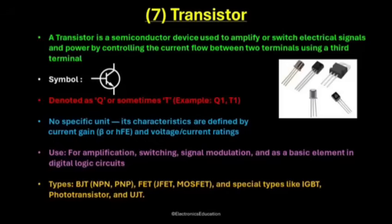Transistors are used for amplification, switching, and signal modulation. They are also the basic building blocks of digital logic circuits. In an amplifier, a transistor takes a small input signal and makes it stronger. In digital electronics, it acts like an on-off switch, forming the logic behind microchips and processors. The most common type is the BJT, which comes in two forms: NPN and PNP. Then there's the FET, which includes JFET and MOSFET types. MOSFETs are widely used.